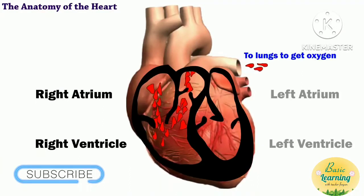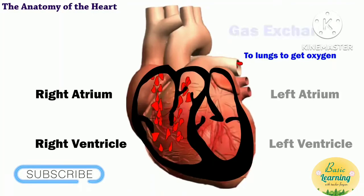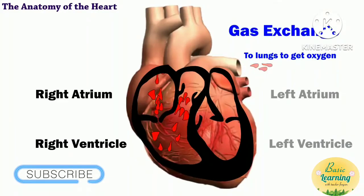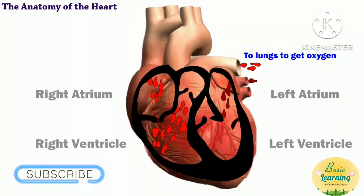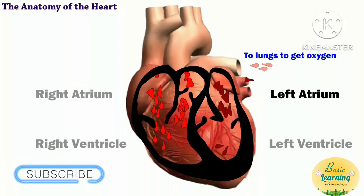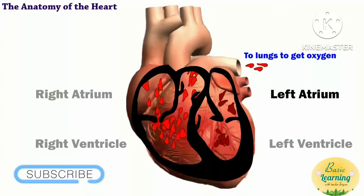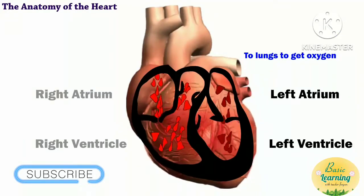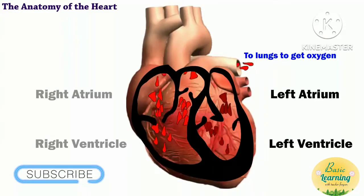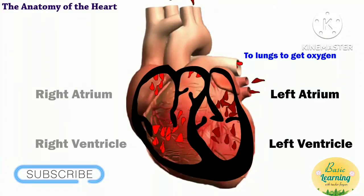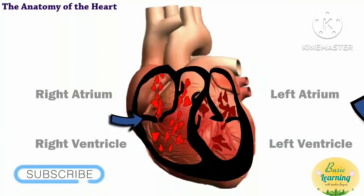It moves to the right ventricle and out to the lungs to pick up more oxygen in a process called gas exchange. The now oxygen-rich blood travels into the left atrium and into the left ventricle.